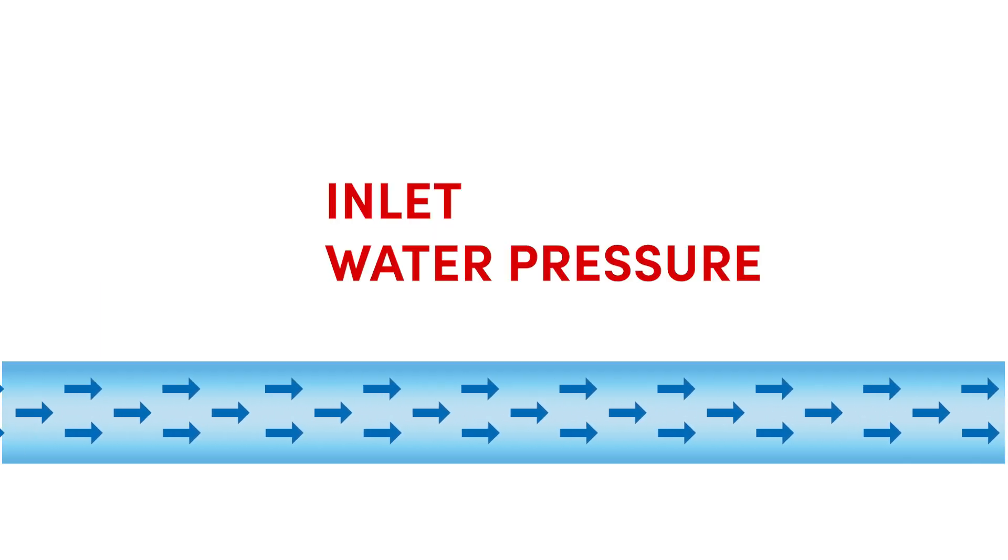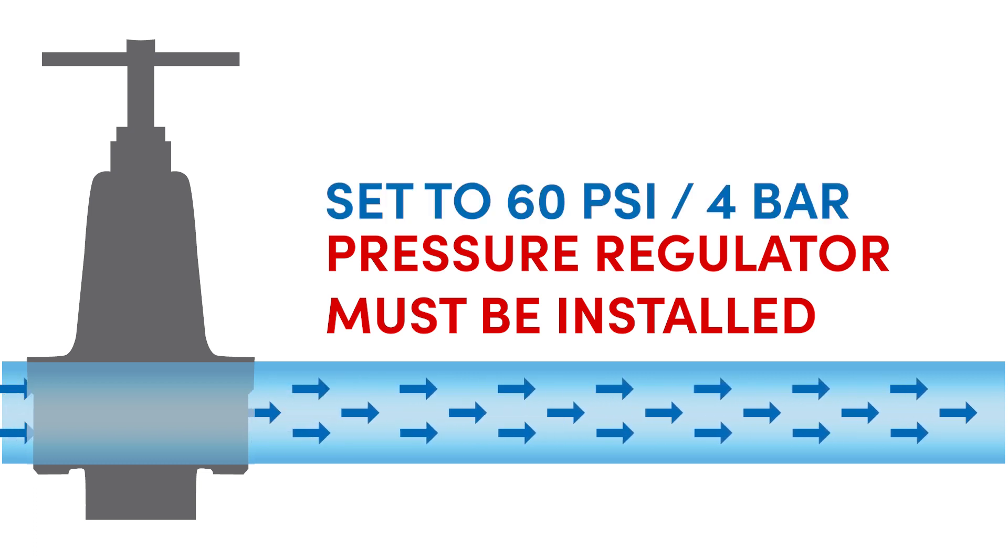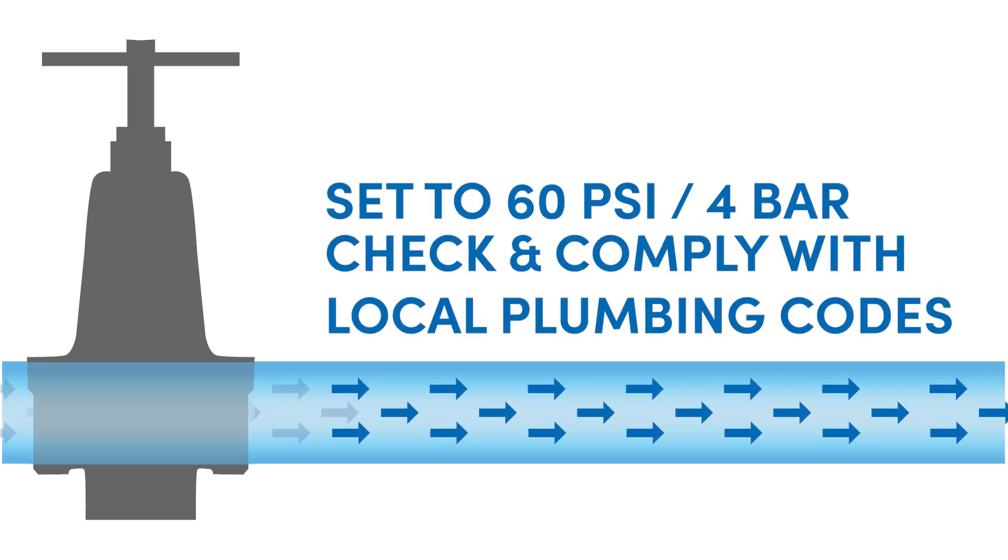If inlet water pressure is over 60 PSI, the pressure regulator must be installed and set at 60 PSI. You must check and comply with all local plumbing codes.